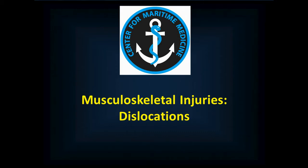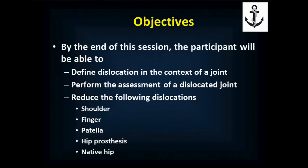Welcome to this session of maritime medicine in which we discuss musculoskeletal injuries, and in particular dislocations. By the end of this session you'll be able to define a dislocation in the context of a musculoskeletal joint, perform the assessment of a dislocated joint, and reduce the following dislocations: a shoulder, a finger, a patella, a hip prosthesis, and a native hip.